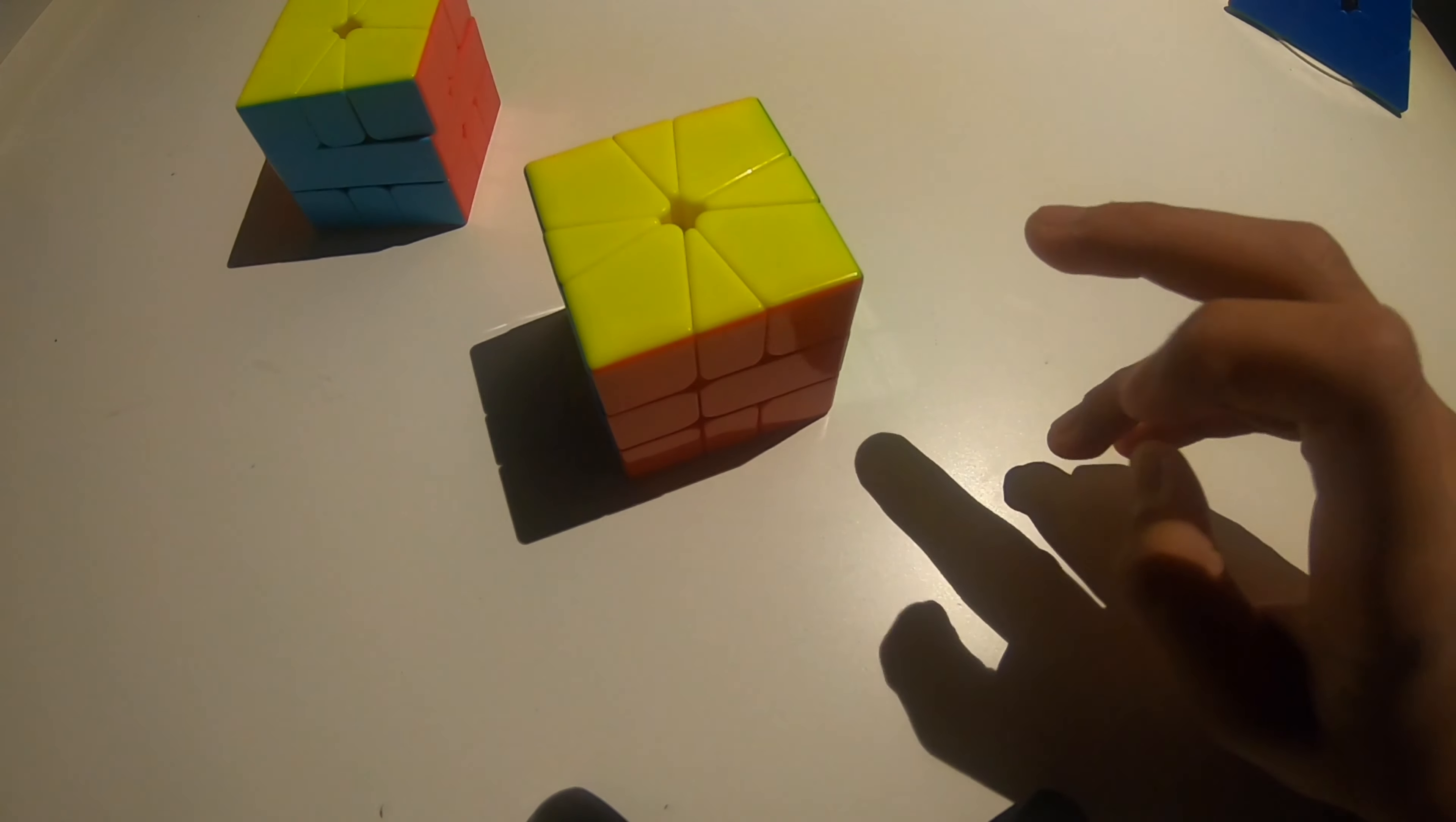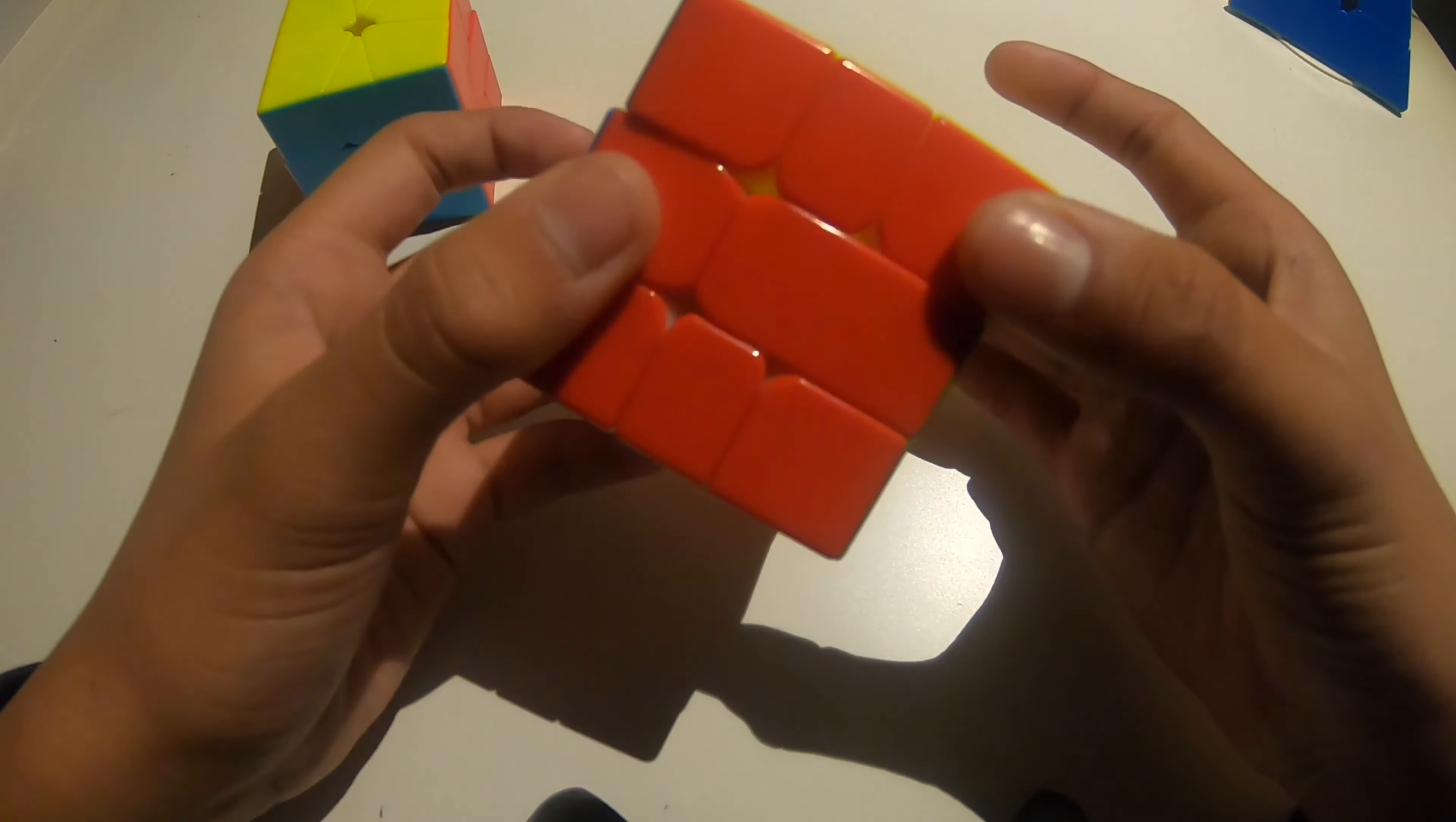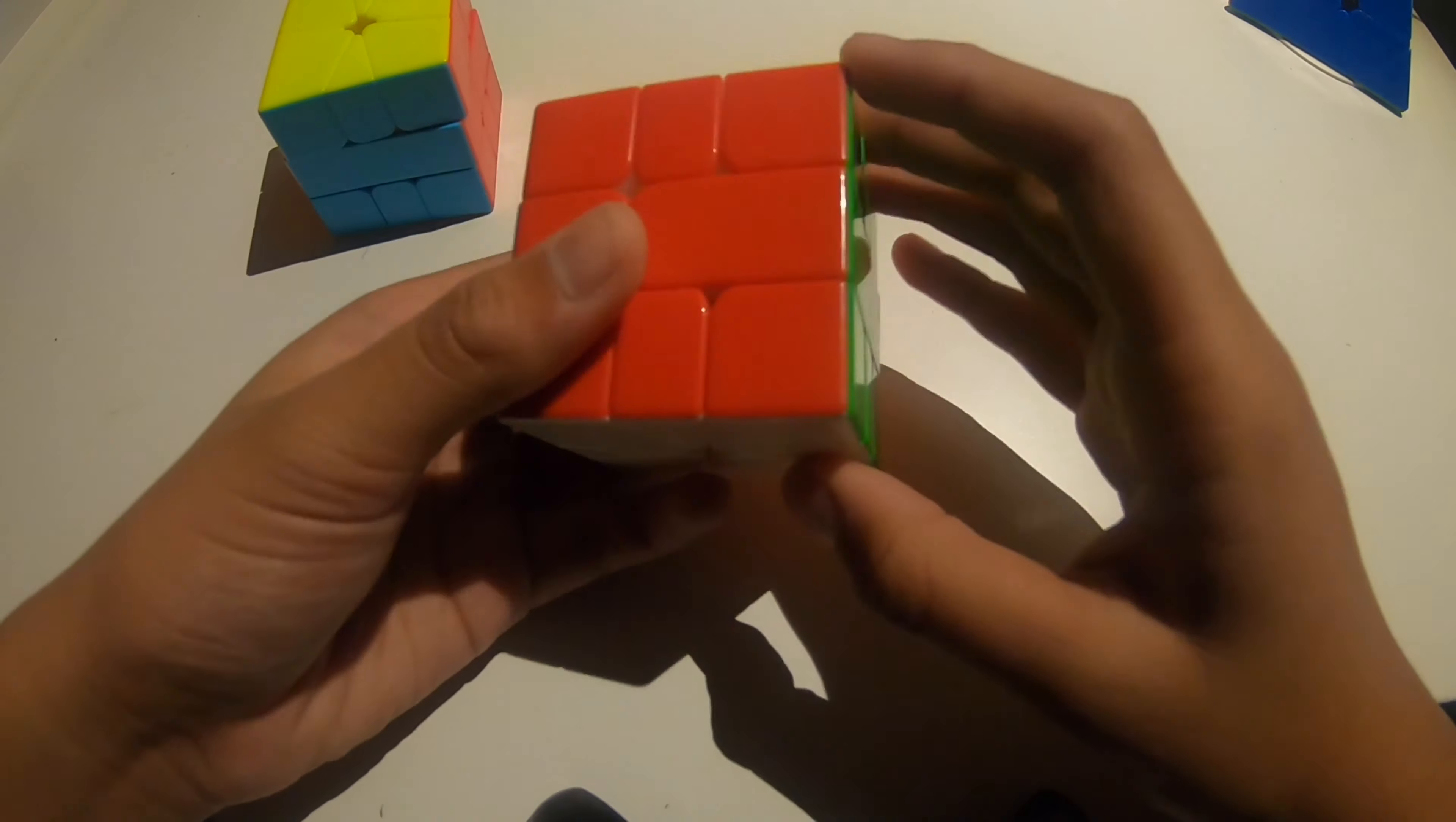This originally might seem like even more of a downside because if it's fast with bad corner cutting, then it's not gonna go well. But there are two reasons why it's not as bad. One is it is magnetic, so as you can see, there are magnets in here so it just kind of clicks into place.